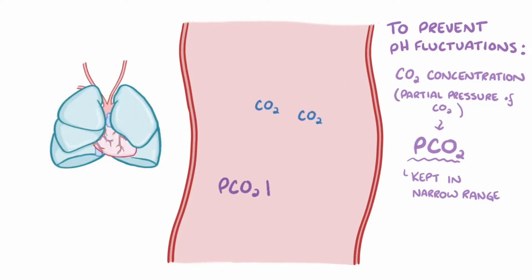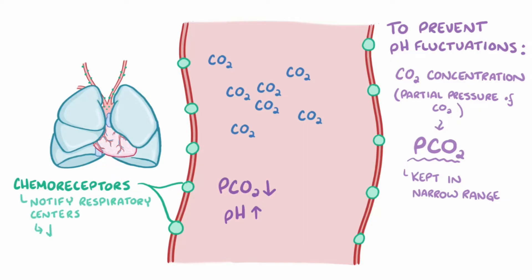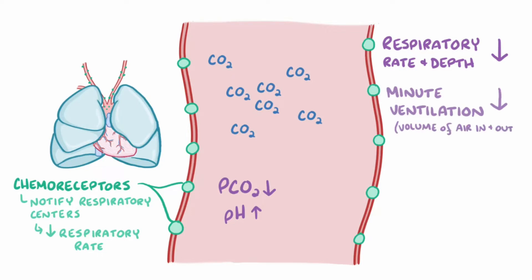If pCO2 levels start to fall and pH levels start to rise, peripheral chemoreceptors found in the walls of the carotid arteries and in the wall of the aortic arch start to fire less, and that notifies the respiratory centers in the brainstem to decrease the respiratory rate and depth of breathing. As the respiratory rate decreases and breaths become more shallow, the minute ventilation decreases, which is the volume of air that moves in and out of the lungs in a minute. The decreased ventilation means less carbon dioxide moves out of the body, which increases the pCO2 and lowers the pH.